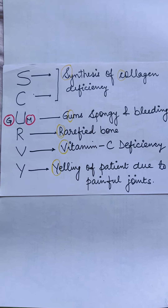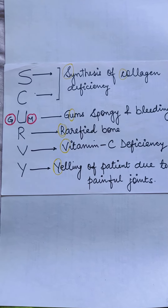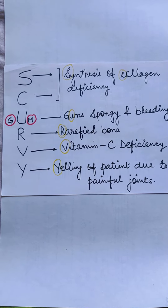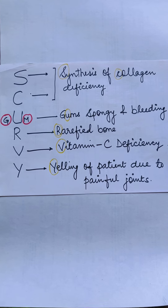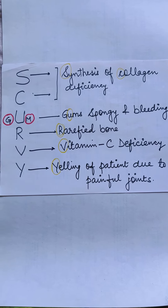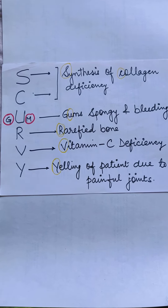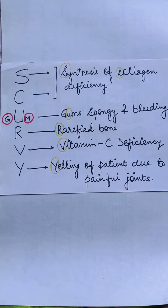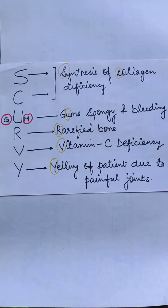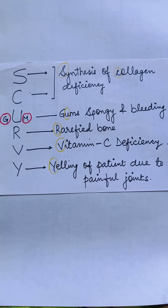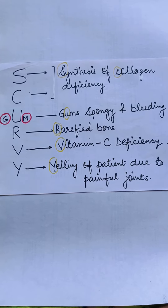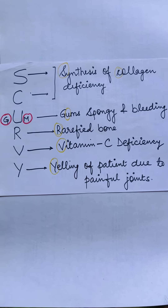Now coming to the first part of the mnemonic, SCURVY: SC as a whole stands for Synthesis of Collagen Deficiency. GUM — the gum is spongy and bleeding. R stands for Rarified Bone. V stands for Vitamin C Deficiency, and Y stands for Yelling of the patient due to Painful Joint.